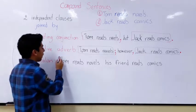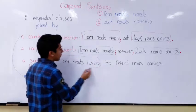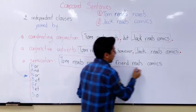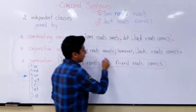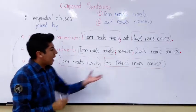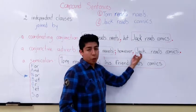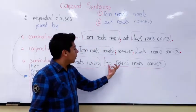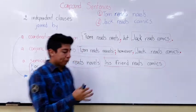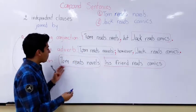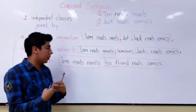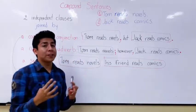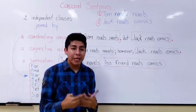To finish, I can use a semicolon. I say 'Tom reads novels' as my first independent clause, and my second independent clause is 'his friend reads comics.' Notice that I changed the subject — I didn't write 'Jack,' I wrote 'his friend.' This is because when using a semicolon to join two independent clauses, the two clauses need to be directly related.